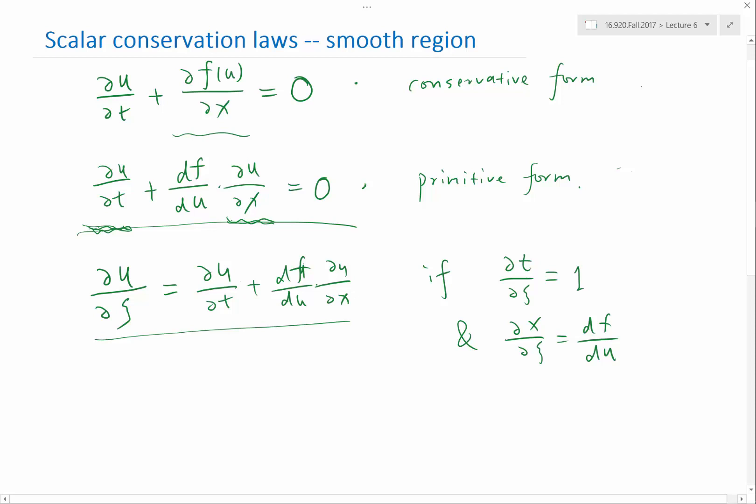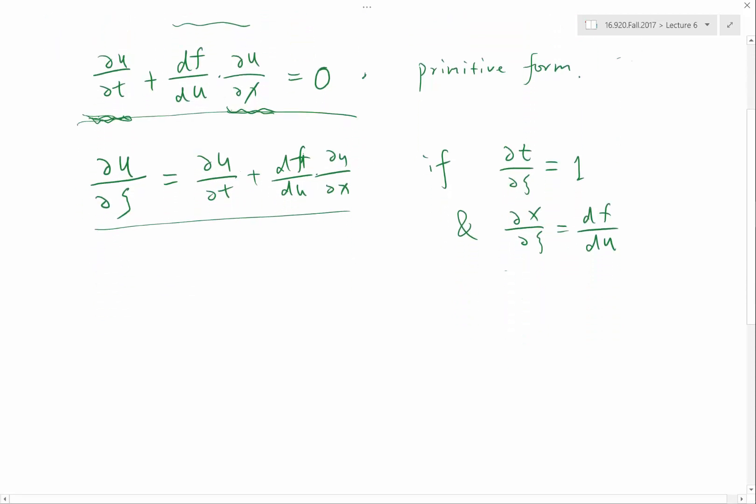So how do I perform that, how do I construct this coordinate c? Let's look at the t and x plot. So partial t partial c is equal to one, that means as I increase in the c direction, t has to increase. Partial x partial c is equal to df/du, that means as I change in the c direction, x might also have to change. And x would increase if df/du is positive and would decrease if df/du is negative.